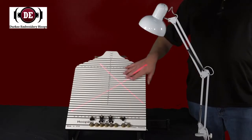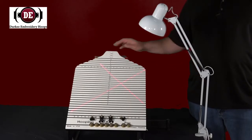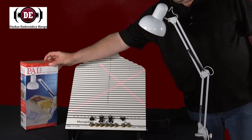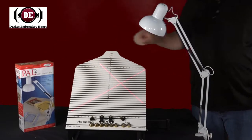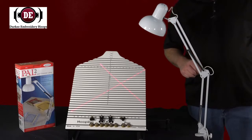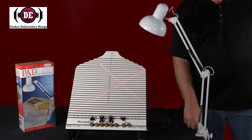Once you remove your new hooping station from the box, what you're going to find underneath is your new laser light. The laser light is designed to help you find the center location that you've marked on your shirt for embroidery. It does come with two options for mounting.